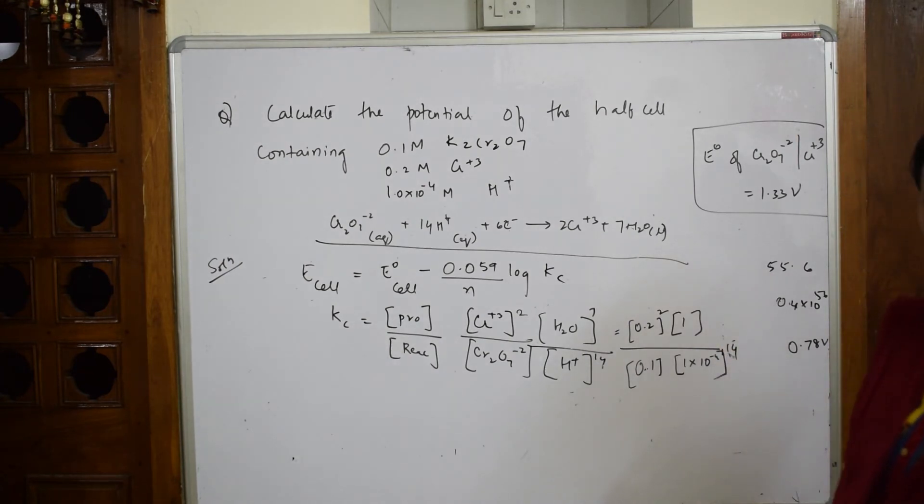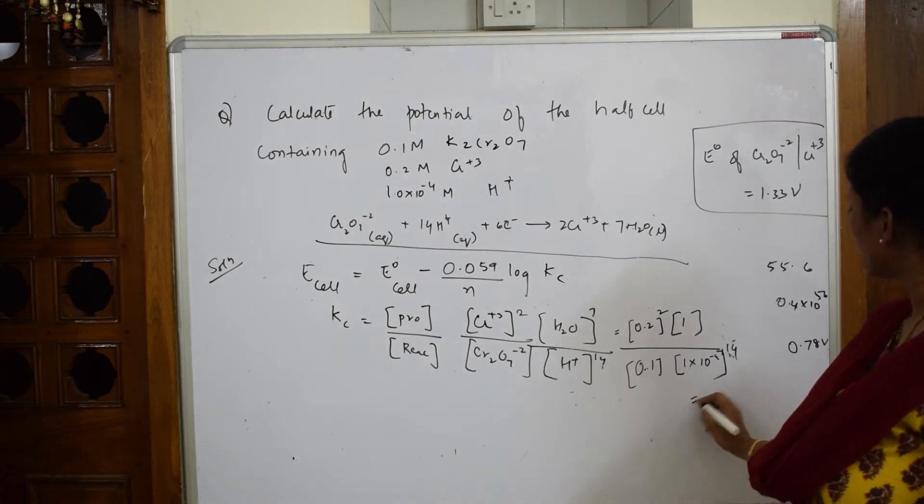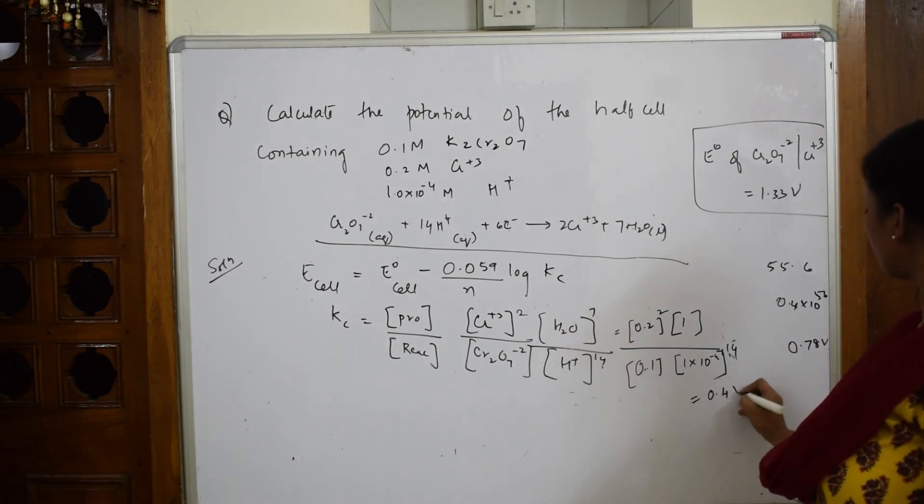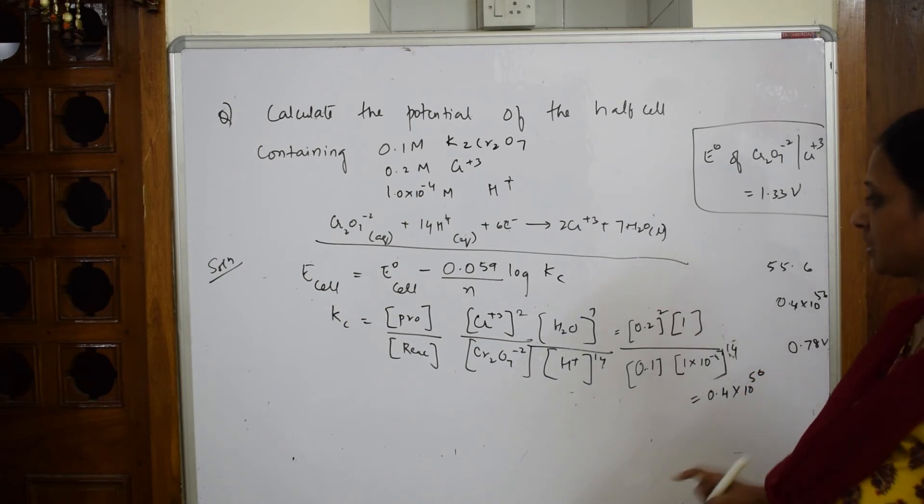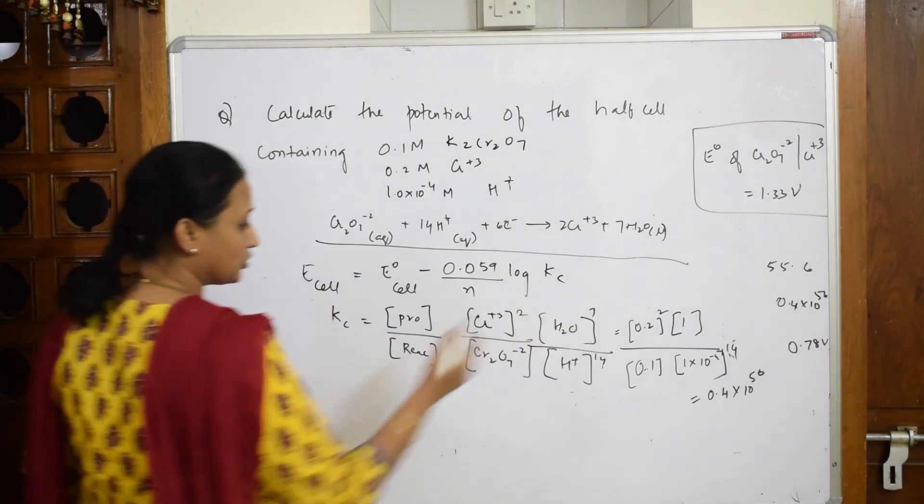Now what are we going to do? We are going to now solve this whole thing. When you solve this whole thing you get an answer of 0.4×10^56. Now still I am not done. Why am I not done? Because I have to find out log Kc value.